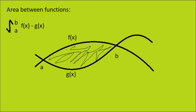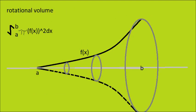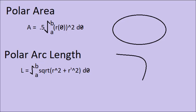The area between functions, you just subtract the different areas. Rotational volume is the integral from a to b, pi r squared, where r is your function for your height. For polar area, you use the formula area is equal to 1 half integral from a to b, r of theta squared, d theta. And your polar arc length is integral from a to b, square root of r squared, plus r prime squared, d theta.